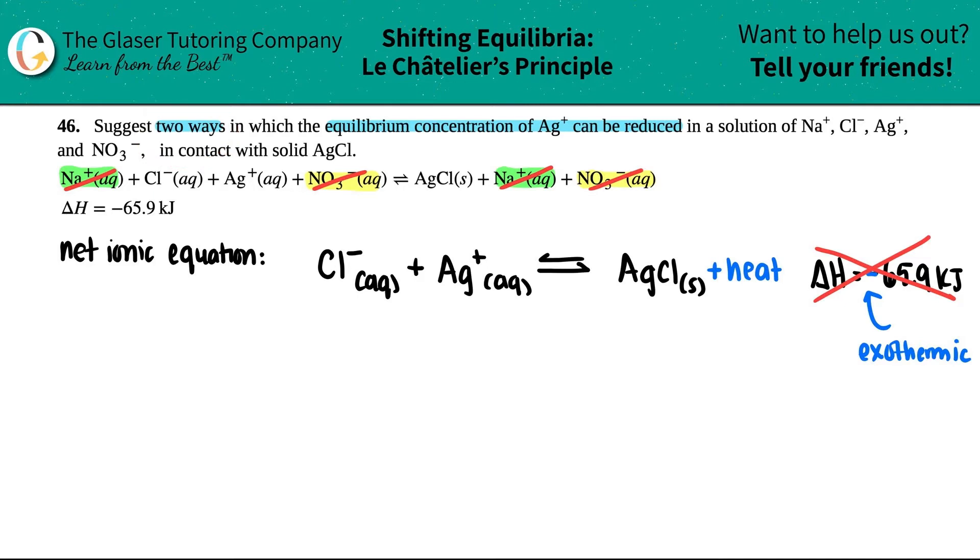So I need to suggest two ways in which the equilibrium concentration of Ag will be reduced. So it looks like they're forcing me to pick one of the two reactions, whether I'm doing the forward reaction or the reverse reaction. I want Ag plus to be reduced. Here's the Ag plus, and I want it reduced. So would it make sense for my reaction to go in the reverse direction? If I'm going this way, I'm going to make more of this. That's not what I want. I want to go in the opposite direction. So I want this forward reaction.